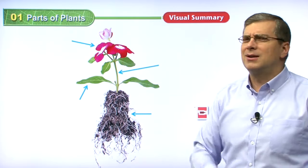Number four: which part carries food and water to the plant? You have the roots underground and the leaves up top. What part carries that food up from the ground? That part, of course, is the stem. It's also the part that supports the plant, that makes the plant stand up straight and tall and hopefully strong.